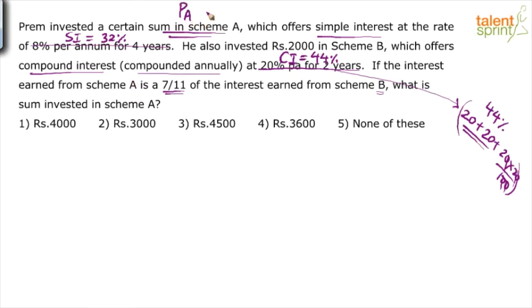Let us assume it is P, PA. Now, what is the question? Look at this. This is the statement. If the interest earned from scheme A, how much is earned from scheme A? 32% of what? The principal that is invested. So 32% of PA is equal to, so that replaces equal to 7 by 11, 7 by 11 of the interest earned from scheme B.